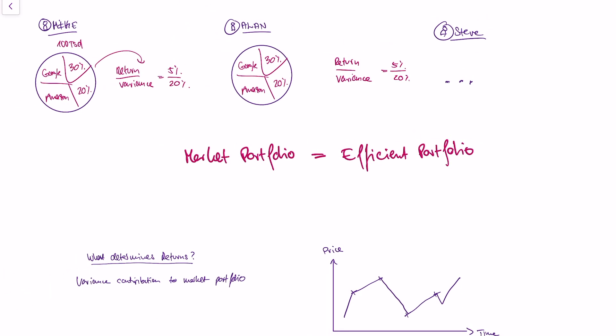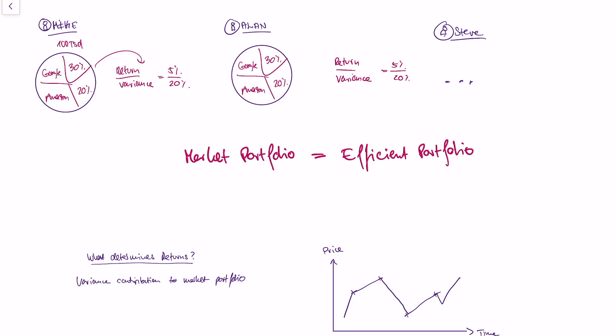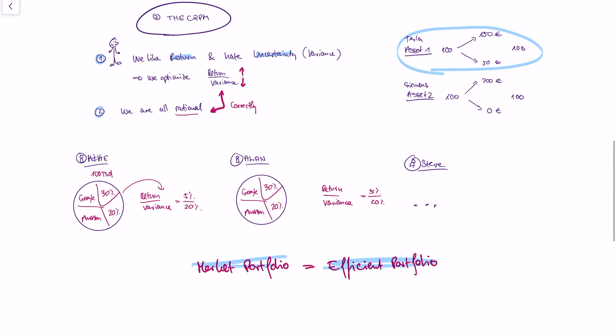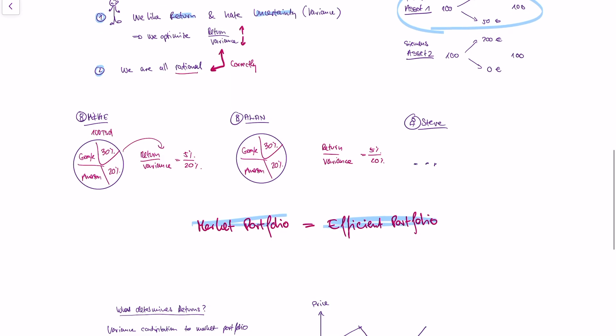If we look at the world and say it has 100 billion dollars, we can see the optimal distribution of this wealth just by looking at how wealth is distributed. Because every single player acts rationally, the resulting market portfolio is rational and efficient as well. In summary: if people are rational and optimize return over variance, then the market portfolio will have the optimal return over variance ratio.